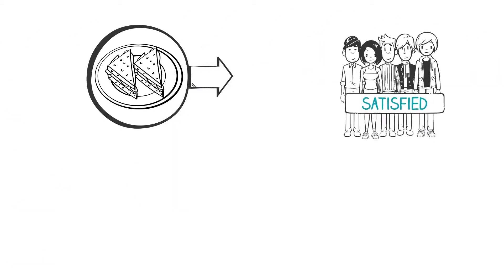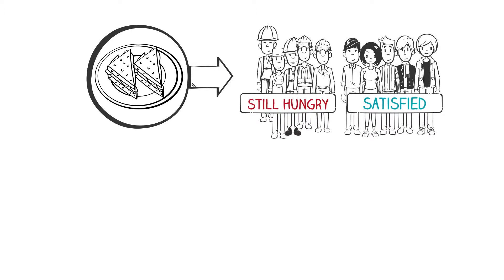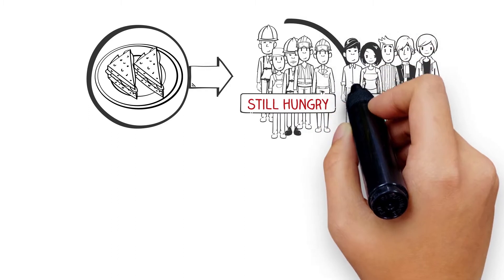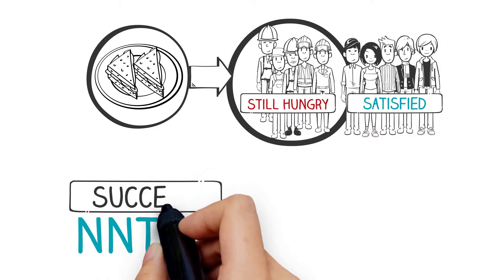If you made cucumber sandwiches, and half of the guests were construction workers, chances are that 50% of the people would still be hungry after lunch. Success rate? 50%. NNT equals 2.